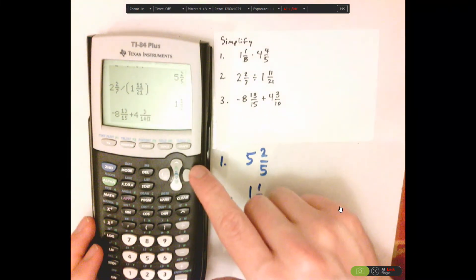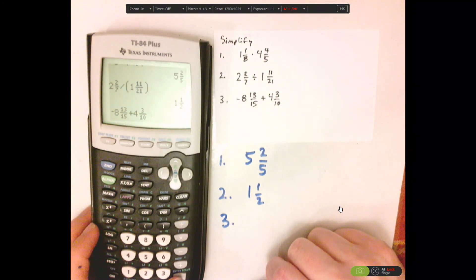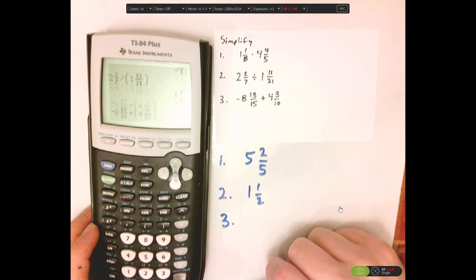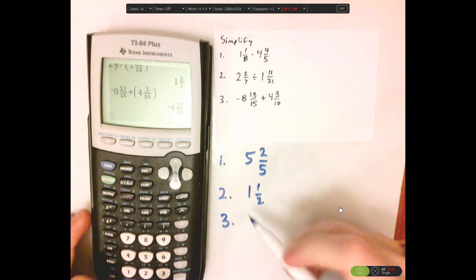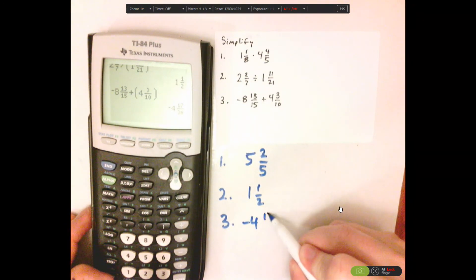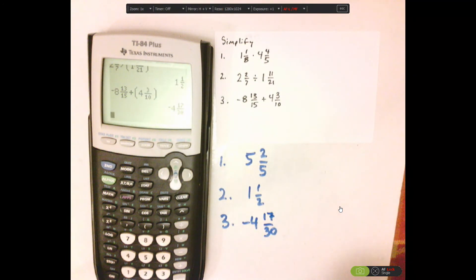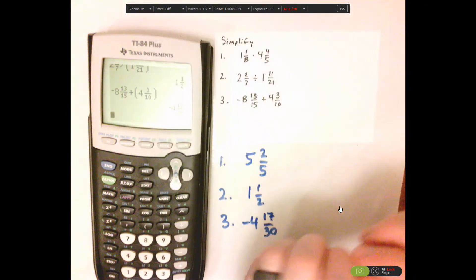It's not that bad, but calculator does make it real easy. So that's negative 4 and 17 thirtieths. And that's it.